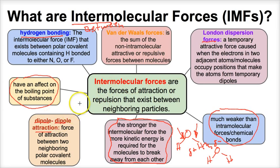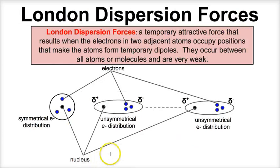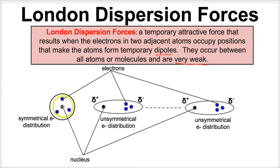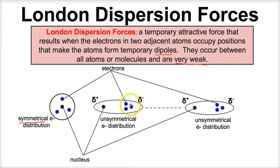Let's first talk about London dispersion forces. London dispersion forces are a temporary attractive force that results when the electrons in two adjacent atoms occupy positions that make the atoms form temporary dipoles. They occur between all atoms or molecules, they're temporary, and they're very weak. Let's suppose we have an atom with a nucleus at the center. We tend to think electrons surround the nucleus symmetrically, but occasionally these electrons might go to one end of the atom, creating a partial negative charge on one side and a partial positive charge on the other.